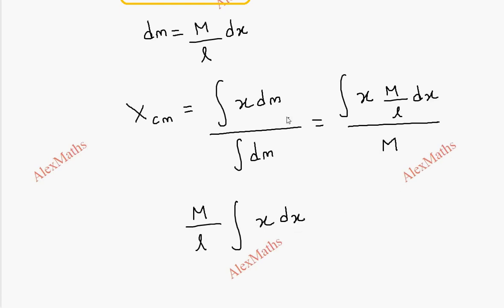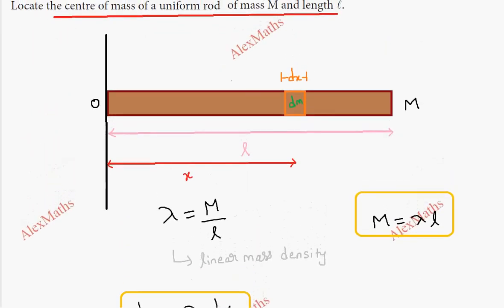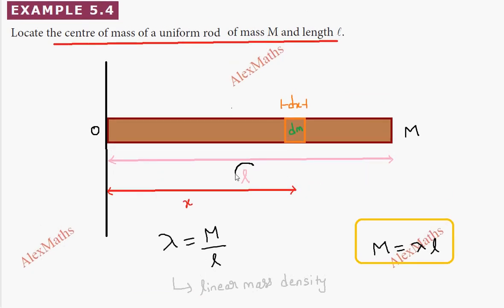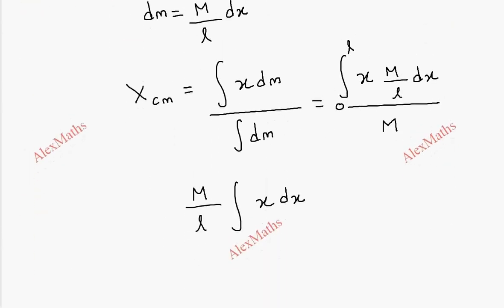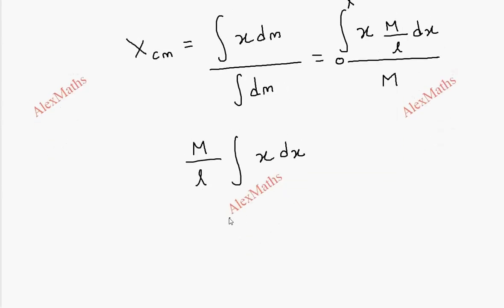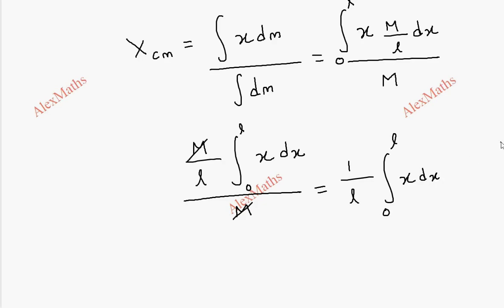The full length of the rod runs from 0 to L, so the distance x is covered from 0 to L. The expression simplifies to (1/L) times the integral from 0 to L of x dx.